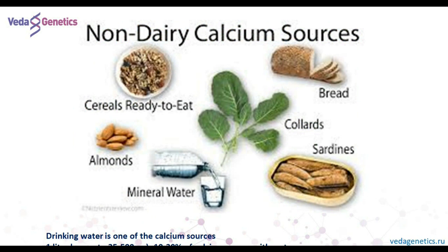If we are talking about non-dairy calcium sources, products such as broccoli and kale also contain calcium. Kale contains almost the same amount of calcium as milk food, which is very good for vegetarians. Fresh orange juice without preservatives also contains calcium, but in a smaller portion.